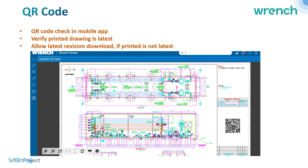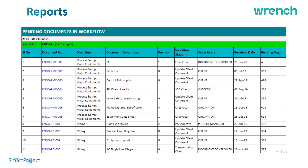When drawings are finally issued and printed outside your system, a QR code is printed on each drawing. A mobile app is provided so you can check and verify that the printed drawing you are about to use is the latest revision, ensuring that no document of an older revision is in use for actual construction or any other purpose.